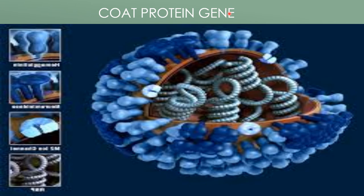Coat protein genes: transgenic plants have the viral coat protein gene linked to a strong promoter. For example, in tobacco, tomato, sugar beet, and potato, expression of the viral coat protein gene confers resistance to the concerned virus and also gives a measure of resistance to other related viruses. Effectiveness is affected by the amount of coat protein produced in transgenic plants and by the concentration of the virus inoculum.